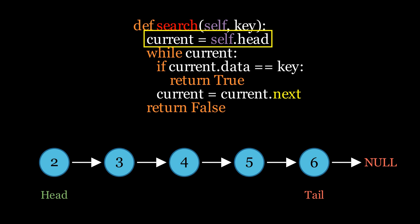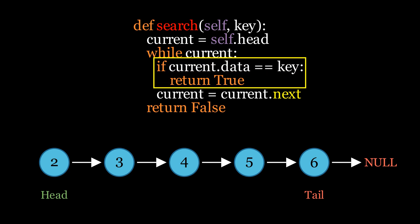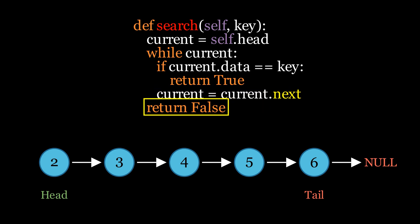We will define the function with a key or target element as the input parameter. Inside the function, we will create a variable called current, initially set to the head node. We will run a loop with the condition: while current is not None. In each iteration we will check if the data of the current node matches the target value. If it matches, we will return true. If not, we will update current to its next node and continue the loop. If the loop ends without finding the element, we will return false.